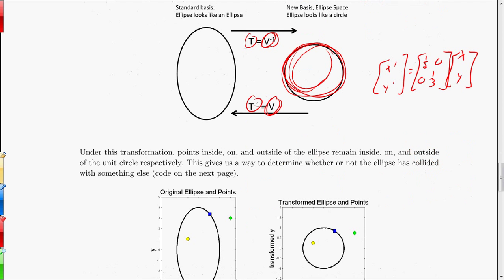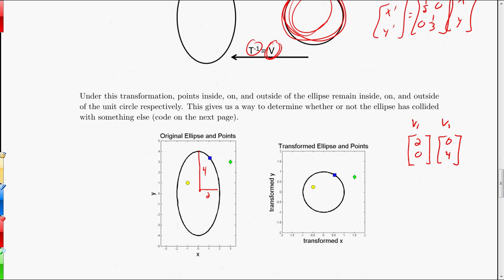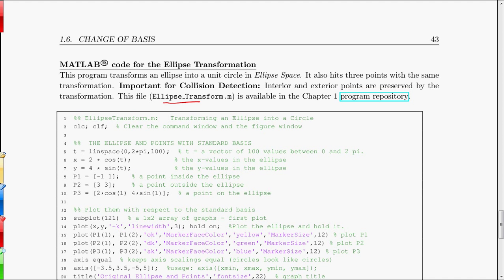The nice thing about this is that any point inside the ellipse will remain inside the unit circle, and vice versa. If you're on the ellipse, you'll end up on the circle; if you're outside the ellipse, you'll be outside the circle. I have some MATLAB code that generates these two graphs. The difference between this example and the one above is that this ellipse has radius vector 2, 4 instead of 2, 3. So my new basis will be V1 = (2, 0) and V2 = (0, 4). First I'm going to plot the ellipse and three points, hit it with the transformation, then plot the ellipse and those three points after transformation.